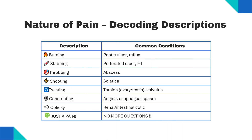The nature of pain — and the patient's own words — matters. Burning pain is seen in ulcers or acid reflux because acid irritates the lining. Stabbing pain, which is sudden, sharp, and short-lasting, comes from perforation or myocardial infarction due to sudden tissue injury. Throbbing pain, like a toothache, occurs as blood flow pulses with swelling. Shooting pain, from nerve root irritation like sciatica, travels along the nerve. Twisting pain occurs in torsion or volvulus, where tissue twists and blood supply is cut off.